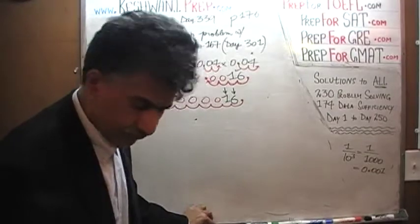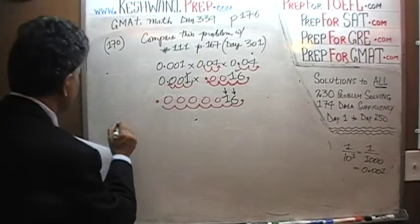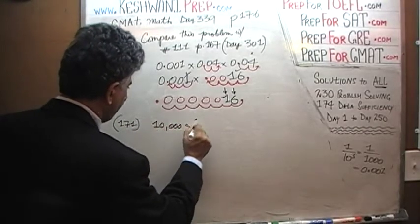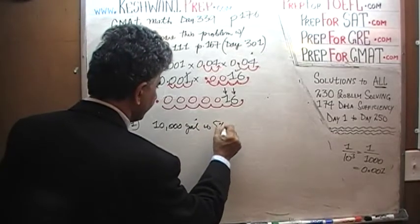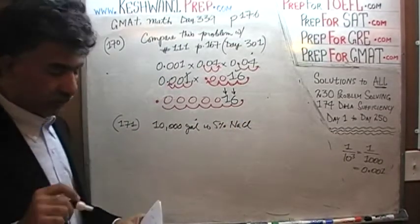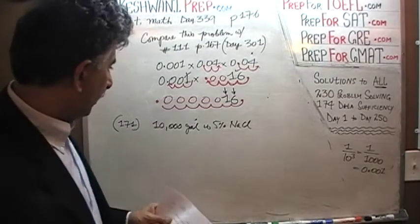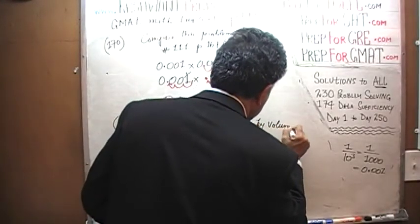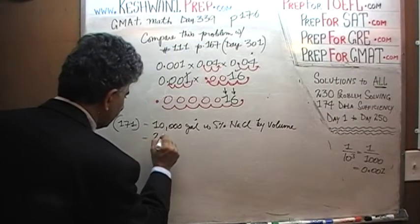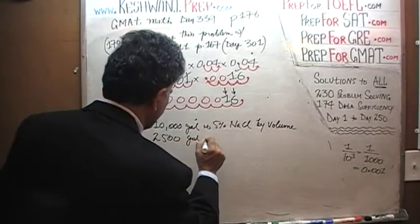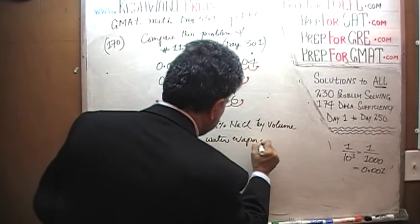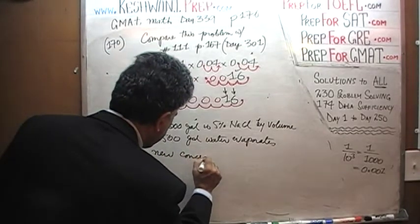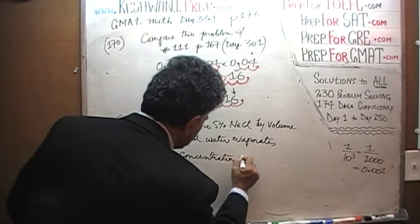In the next problem, number 171, we are told that we have 10,000 gallons of water which is 5% sodium chloride by volume. We are told that 2,500 gallons of water evaporates. The question simply is: what is the new concentration level?